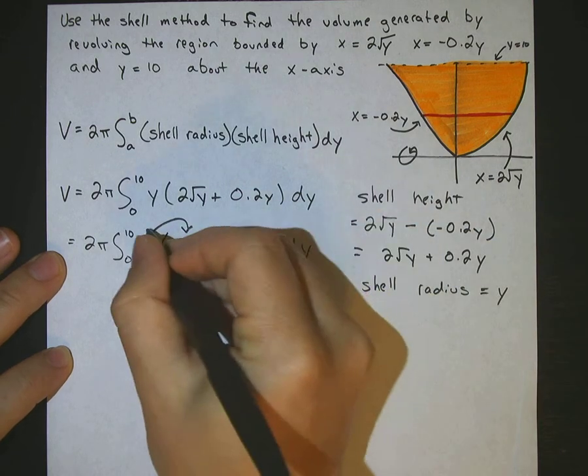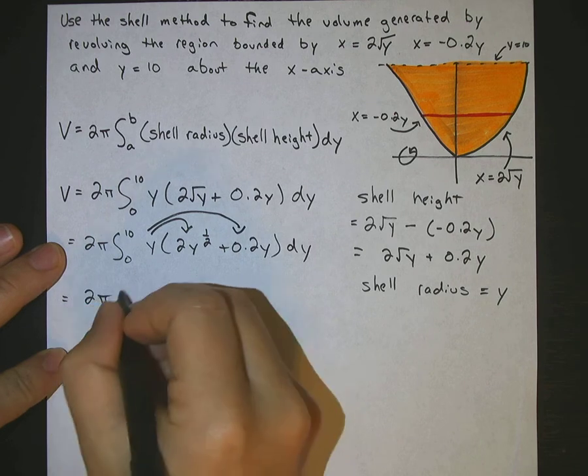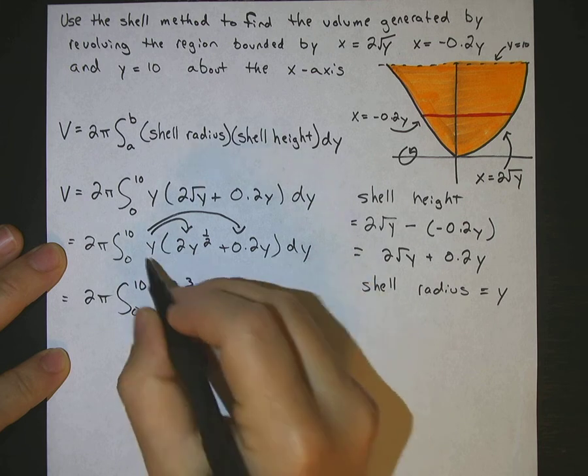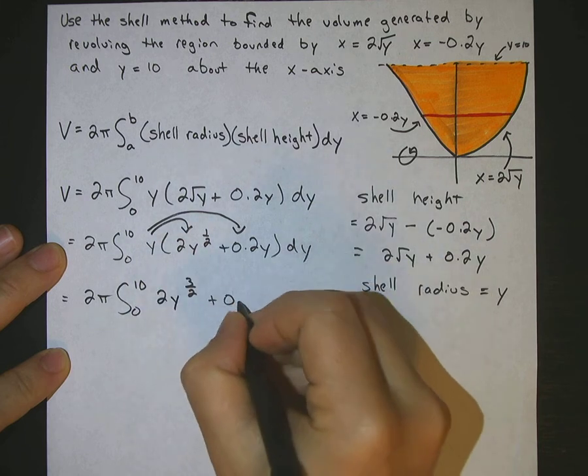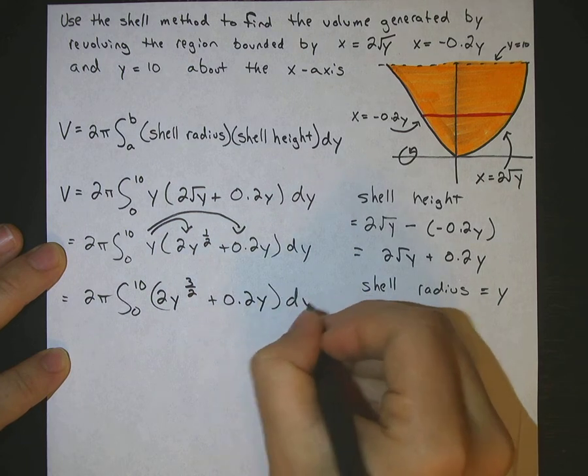Then distribute this y in there. So that would give you 2 pi 0 to 10 of 2y to the 3 halves, because you add a power, plus 0.2y dy. Okay, and now we can integrate.